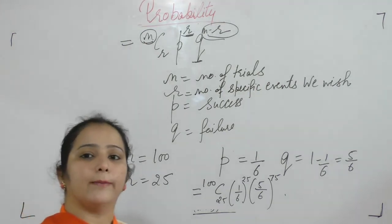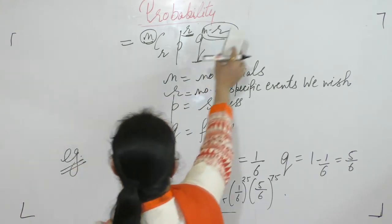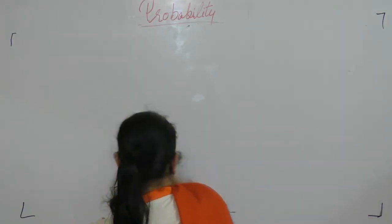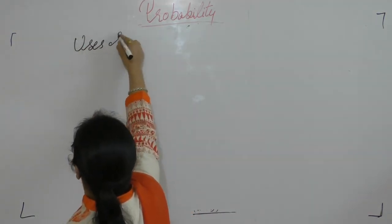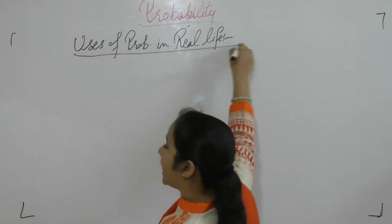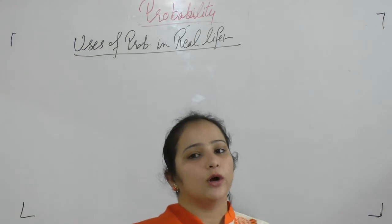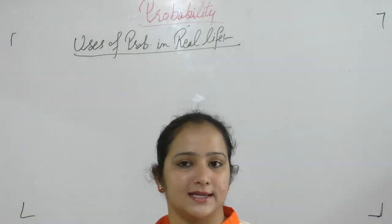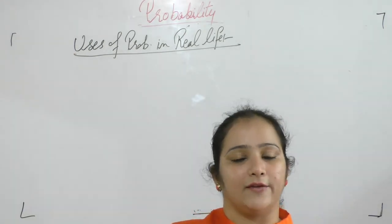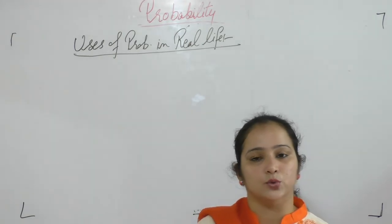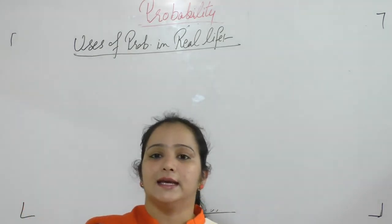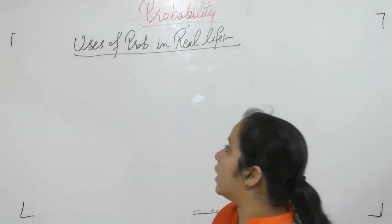Where do we use probability in real life? When any match starts and you toss a coin to decide which team bats first, the probability of either team winning the toss is 50-50. Whether it is a cricket team or a football team, each has an equal probability of winning the toss.